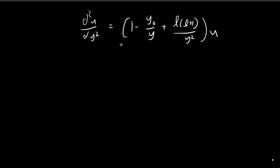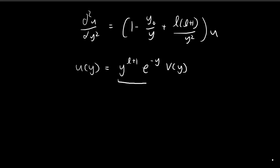In the last video, we managed to simplify our differential equation into such a form. So what we're going to do now is make some smart guesses. We're going to guess that our solution, u of y, is going to be equal to y to the power of l plus 1 times e to the power of negative y times some function v of y. We managed to obtain these two expressions by considering how this differential equation behaves when y tends towards large and small numbers, and by considering those cases we can guess that u of y should behave in such a way — equal to these two functions multiplied by some extra function in terms of y.